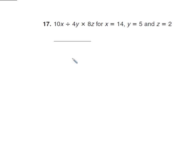Okay, let's move on. They're getting more complicated here. We have three variables. Number 17, we have three variables: we have an x, a y, and a z. For the value x, they want 14. So 10 times 14 divided by 4 times y. Y is 5. 4 times 5 times 8 times z, and the z is 2. Times 8 times 2. So I just got to correctly plug them in.